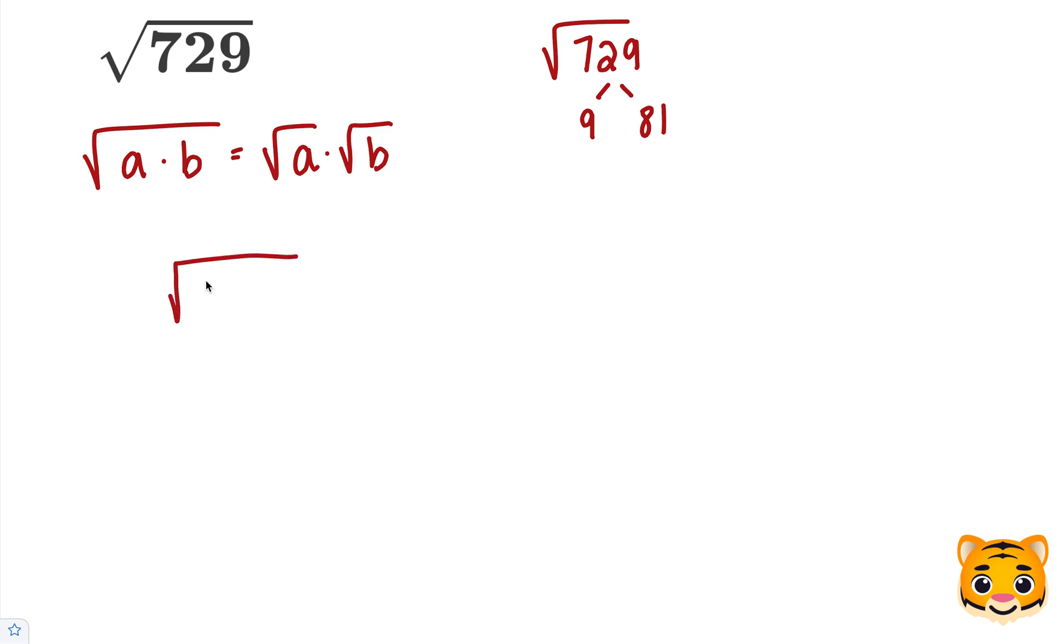Now we can rewrite the square root of 729 as the square root of 9 times 81. We can then use our math rule to simplify this to the square root of 9 times the square root of 81.